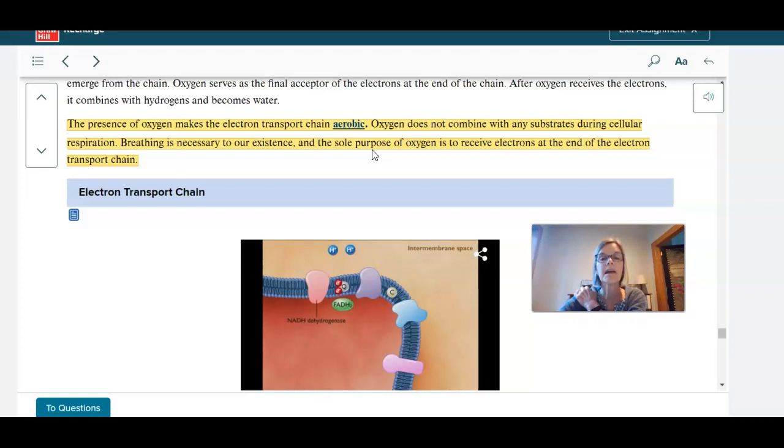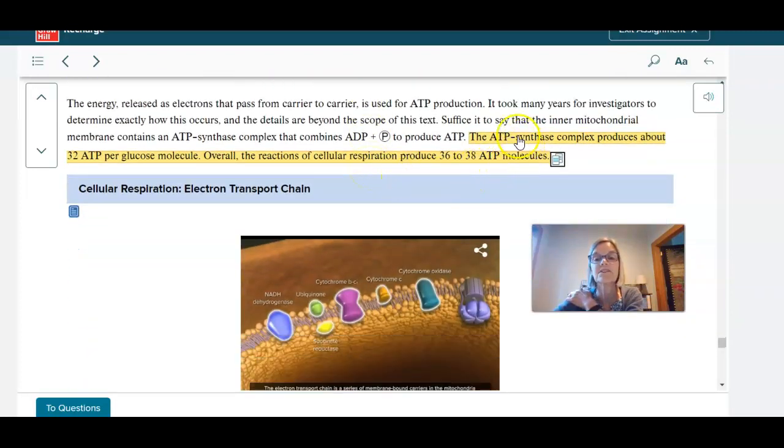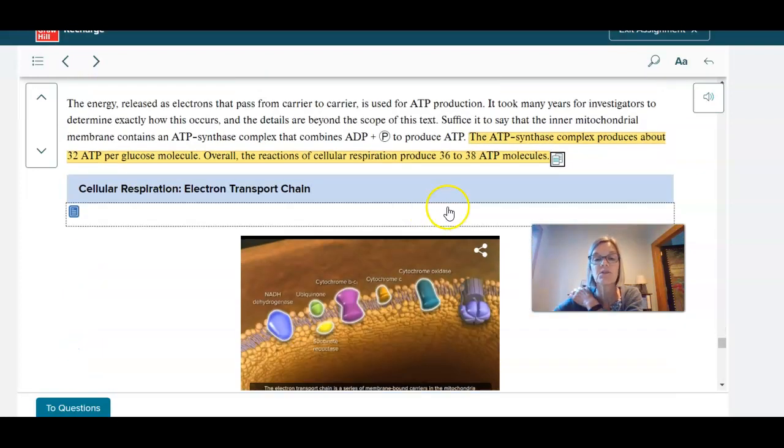And here's something else about it: when we use oxygen and we make ATP through cellular respiration, we make a relatively large amount of ATP. So from one molecule of glucose we make about 36 to 38 ATP.